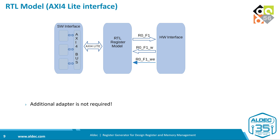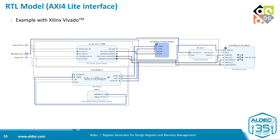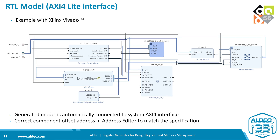With the AXI-4 Lite interface, there is no need to add an additional component if our system already uses this interface. The hardware interface in both cases remains the same — each register field is exported on a port so we can read the current field value, and there are two additional signals to write a new value and a write enable into the register field. In Xilinx Vivado with a MicroBlaze processor and AXI interconnect, the designer assistant can automatically connect the RTL block to the system, and we only need to check the address space in the address editor.